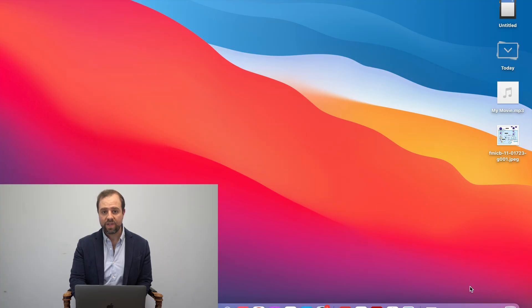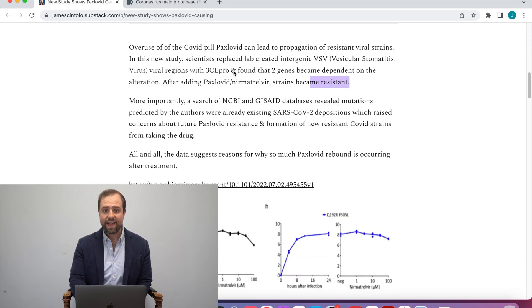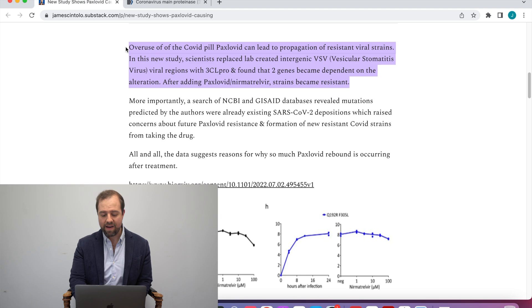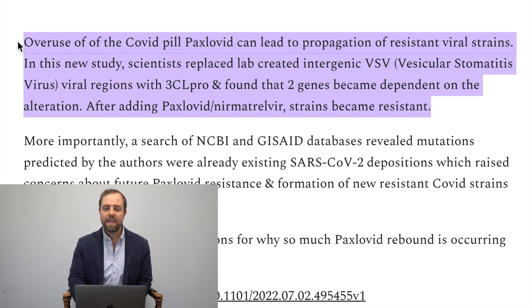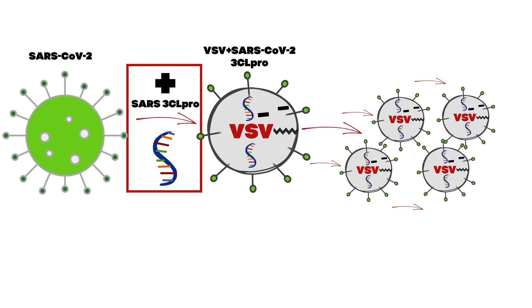I'm going to pull up my Substack post on this Paxlipid study. This was a study done in a lab on a VSV virus, not on people. Scientists took a part of the SARS-CoV-2 virus called 3CL Pro, or 3-chymotrypsin-like cysteine protease, and inserted that into a VSV virus.